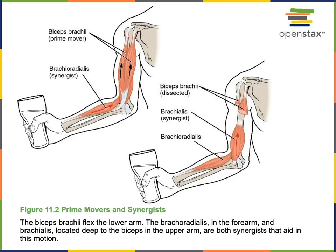A synergist is a muscle that assists the prime mover in an action. For example, with flexion of the humeral-ulnar joint, biceps brachii is the prime mover, and brachioradialis and brachialis are both synergists that can assist biceps brachii's flexion of the humeral-ulnar joint.